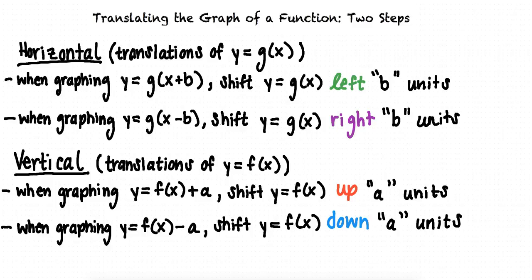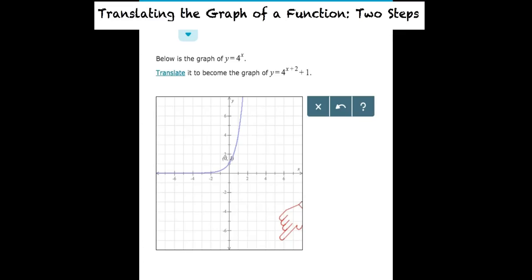Okay, I think I get it. Can we look at an example problem now? Say we have the graph of y equals 4 to the power of x and we are instructed to translate the graph so it will become y equals 4 to the power of x plus 2 plus 1.